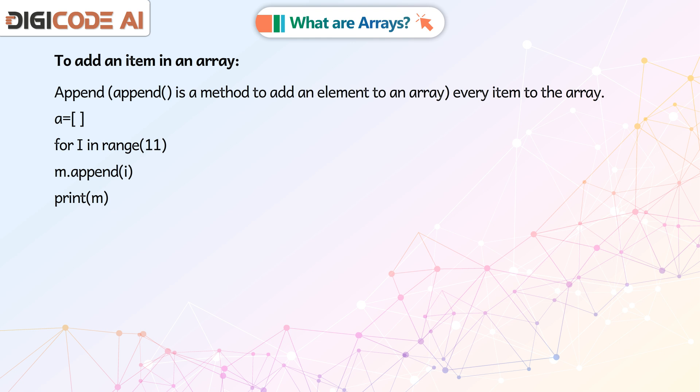A = []. For i in range 11: M.append(i). Print(m).